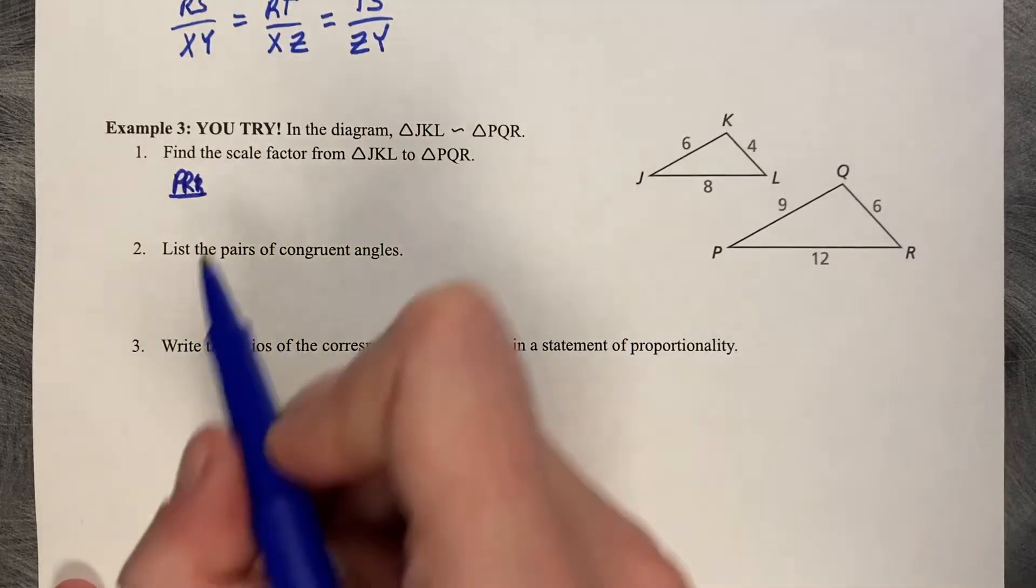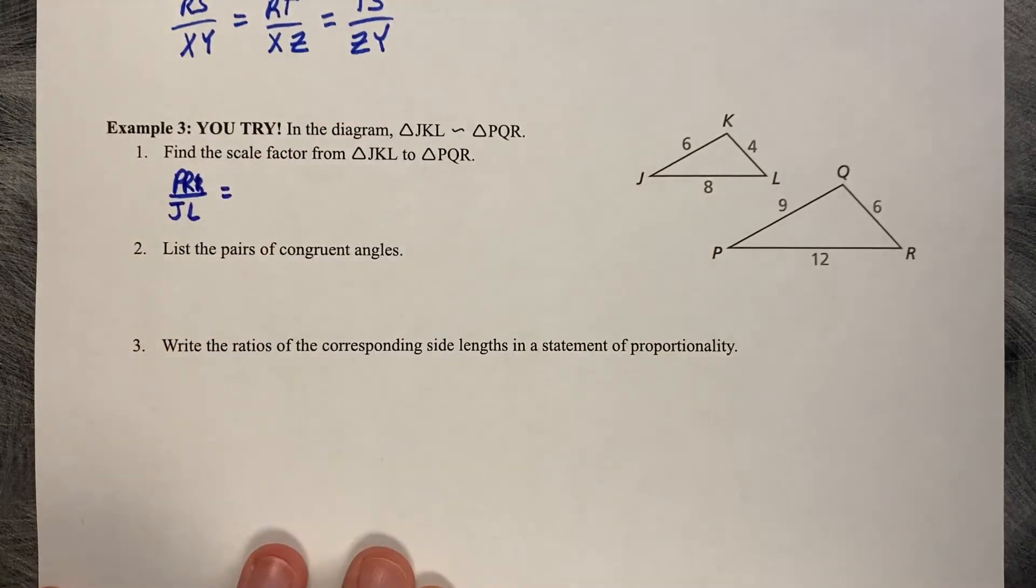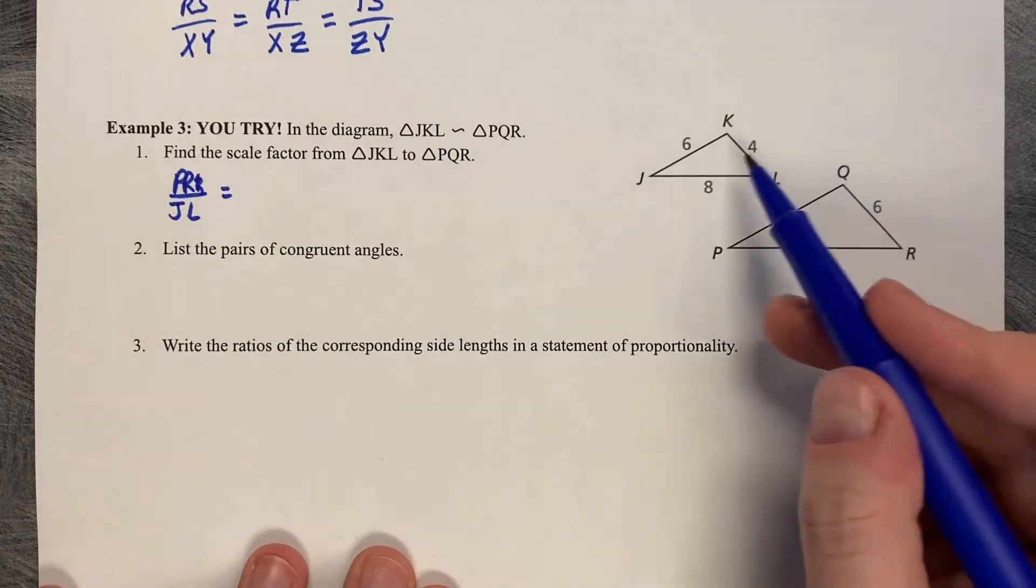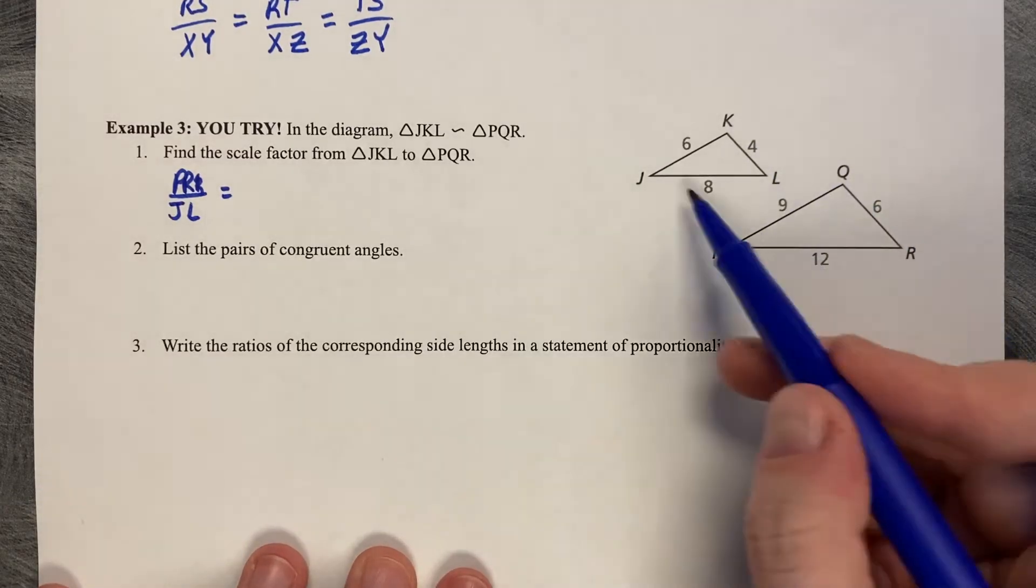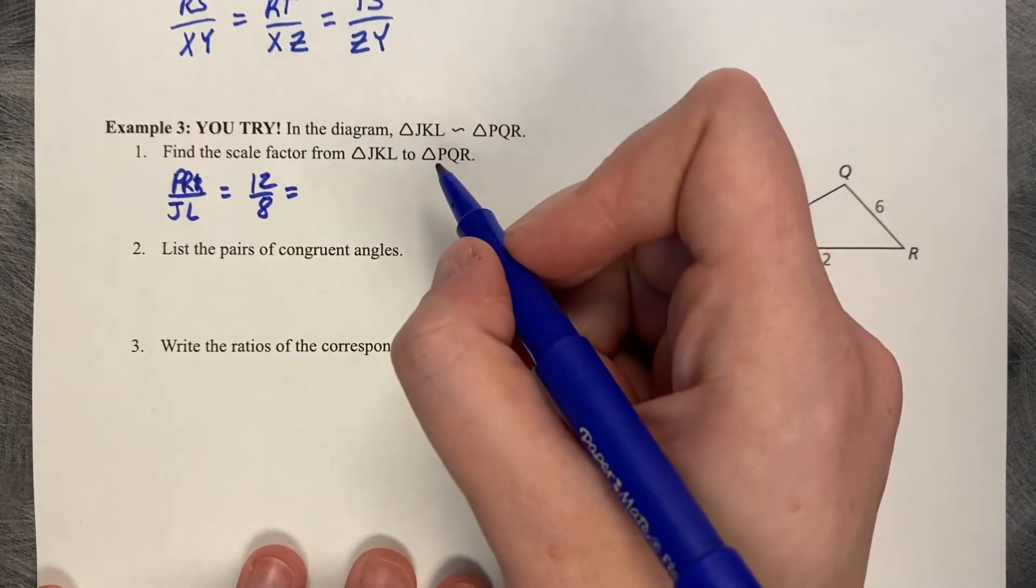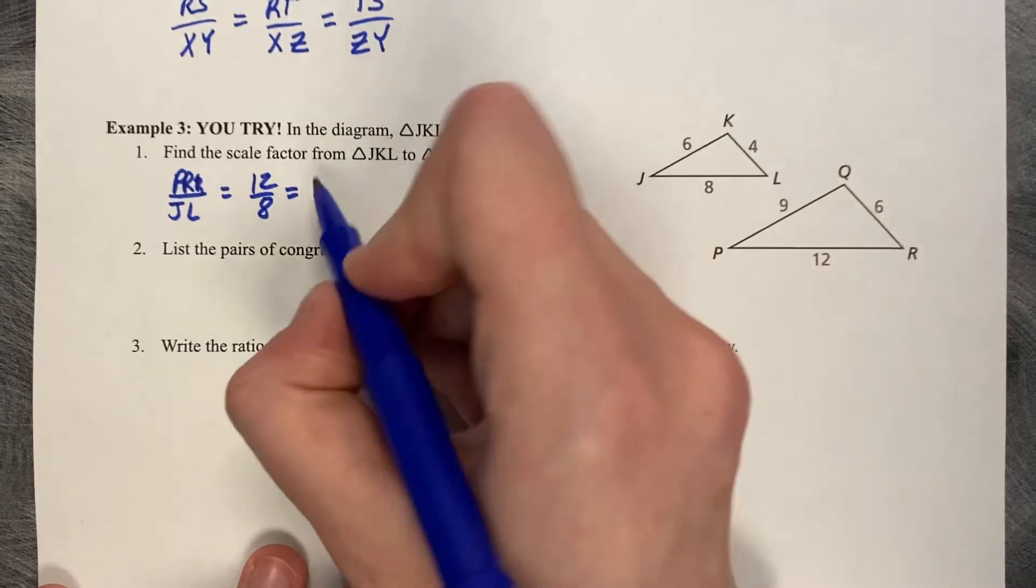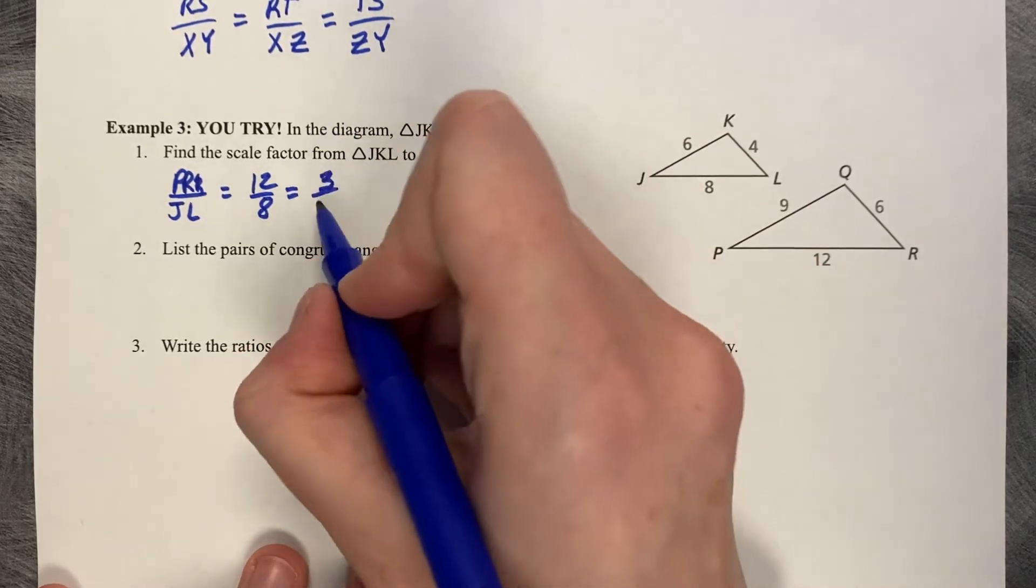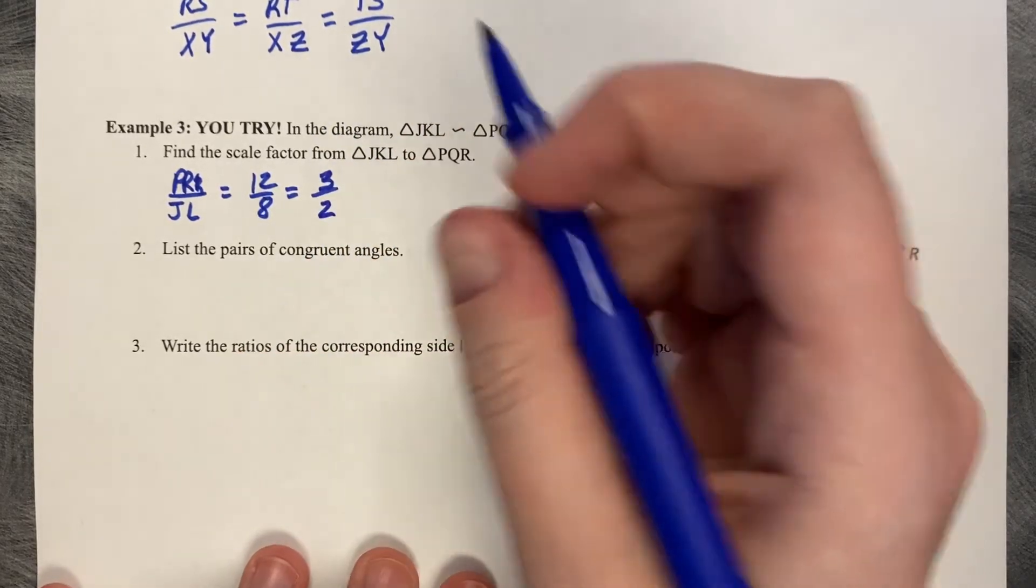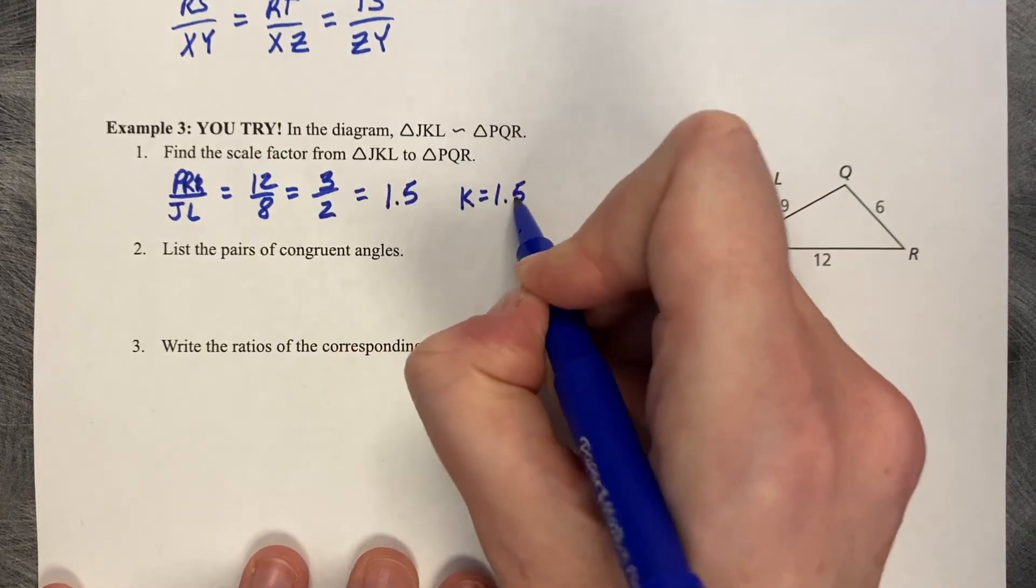I just picked two sides that look friendly to me. I just picked the longer sides. You could do 6 to 9 or 4 to 6, it won't really matter. But I'm going to do 12 to 8. 12 divided by 2 is 6, 8 divided by 2 is 4. That can go again. 6 divided by 2 is 3, and 4 divided by 2 is 2. So 3 halves, which is exactly 1.5. So the scale factor is 1.5.